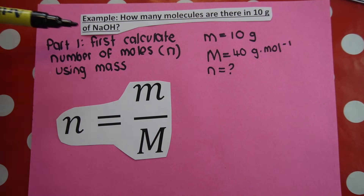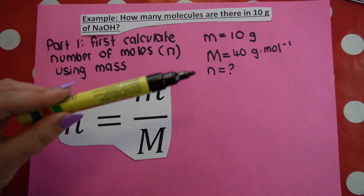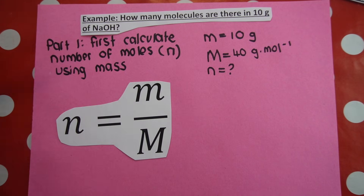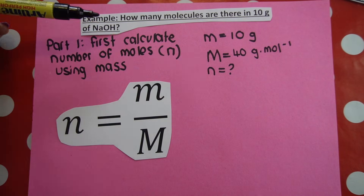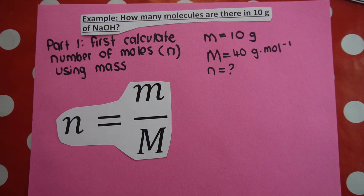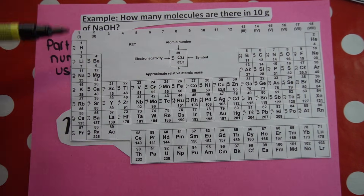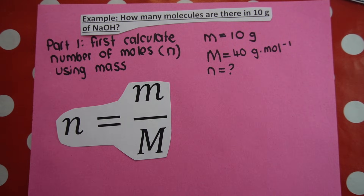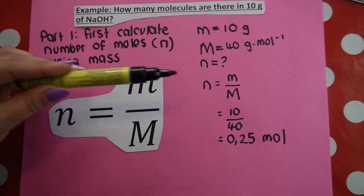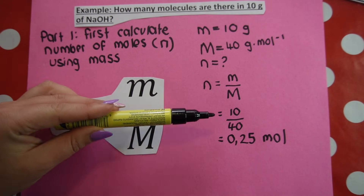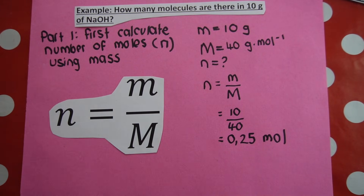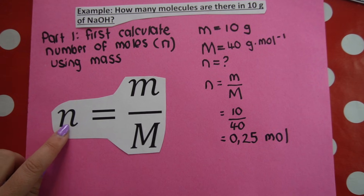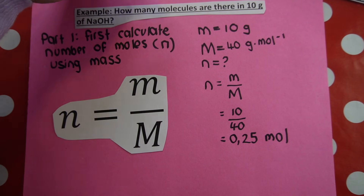So listing the variables from the question: mass is 10 grams. How did I get 40 grams per mole? That is the molar mass of sodium hydroxide — using the periodic table, 23 plus 16 plus 1 gives molar mass of 40. Now calculating number of moles: you write the formula, substitute in, and get an answer of 0.25 mole. But remember, that is N — number of moles — not molecules.